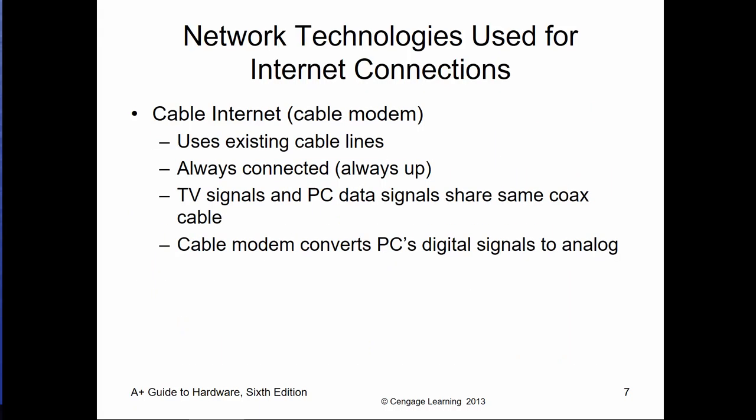A cable modem will use an existing coax line in your house — the same cable that TV and some people's phone comes in on. It goes to a cable modem, and that modem is what actually separates out the frequencies on the coax so that we can have an ethernet cable. That ethernet cable allows us to communicate with our LAN through that modem back to the cable company on the appropriate frequencies, giving us internet access.